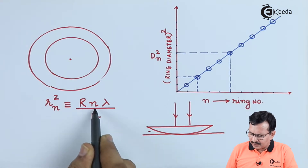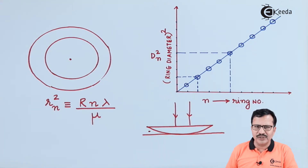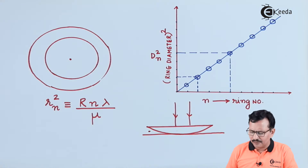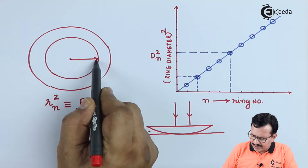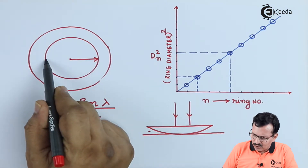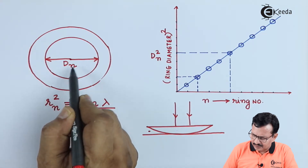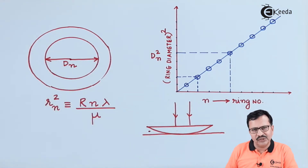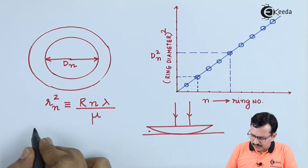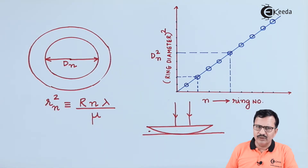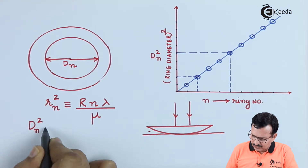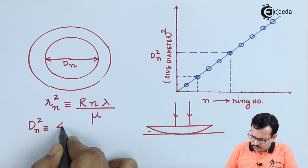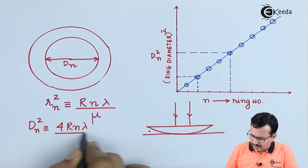So rn squared is equal to capital R into n into lambda upon mu. Mu is of course equal to 1 if the medium is air. Now, expressing in terms of diameter: since rn equals dn divided by 2, we get rn squared equal to dn squared divided by 4, and hence dn squared is equal to 4 into R into n into lambda divided by mu.